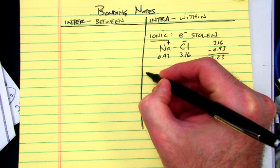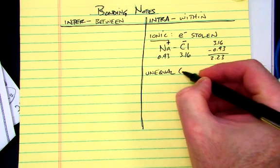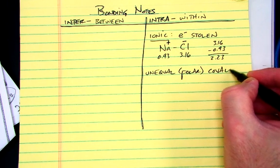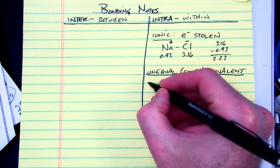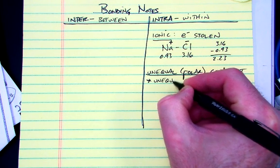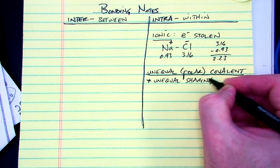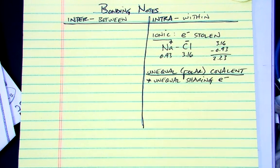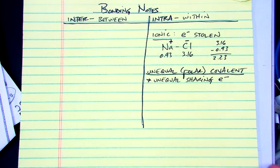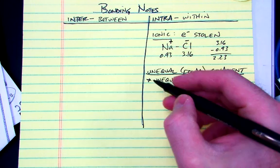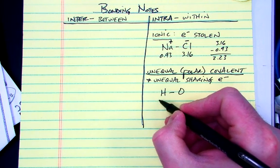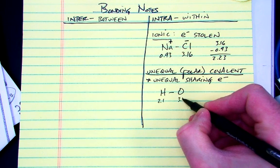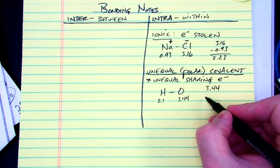The next one is called unequal covalent. It's also called polar, polar covalent. And unequal or polar covalent bonds, you have unequal sharing of electrons. So unequal sharing of the electrons. The analogy we used is if your parents have the car five days a week and you have it maybe one or two days on the weekend, that's an unequal sharing of that car. So that's kind of what happens when we use water and oxygen as our example, a bond between hydrogen and oxygen. And we look up their electronegativities. 2.1 is for hydrogen. Oxygen, 3.44. We're going to take those numbers and we're going to subtract them. This is called the electronegativity difference.